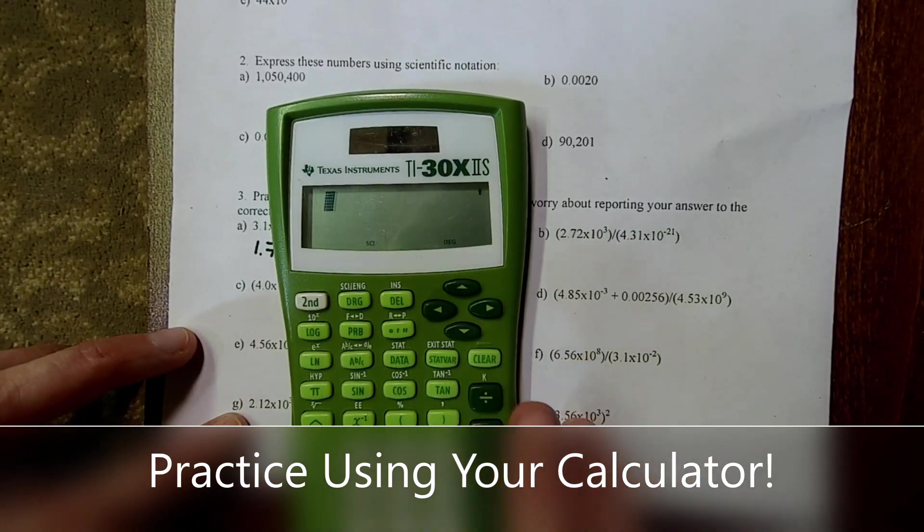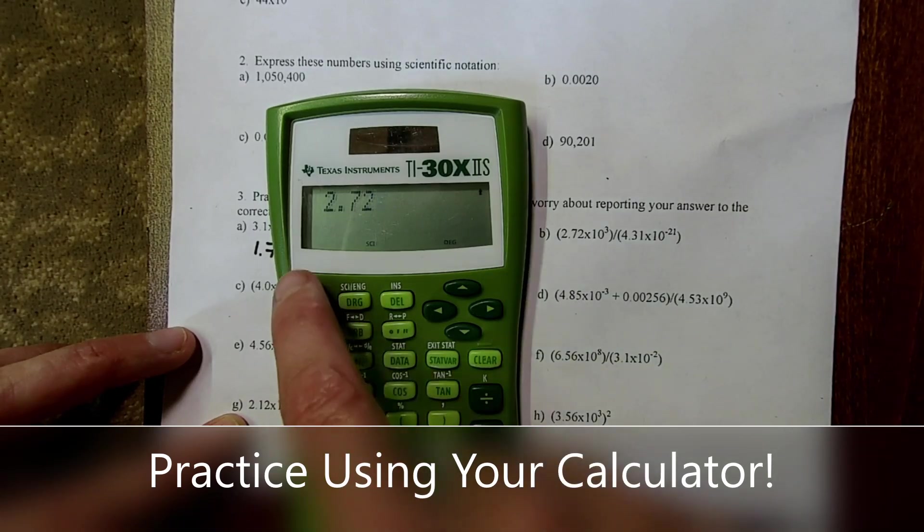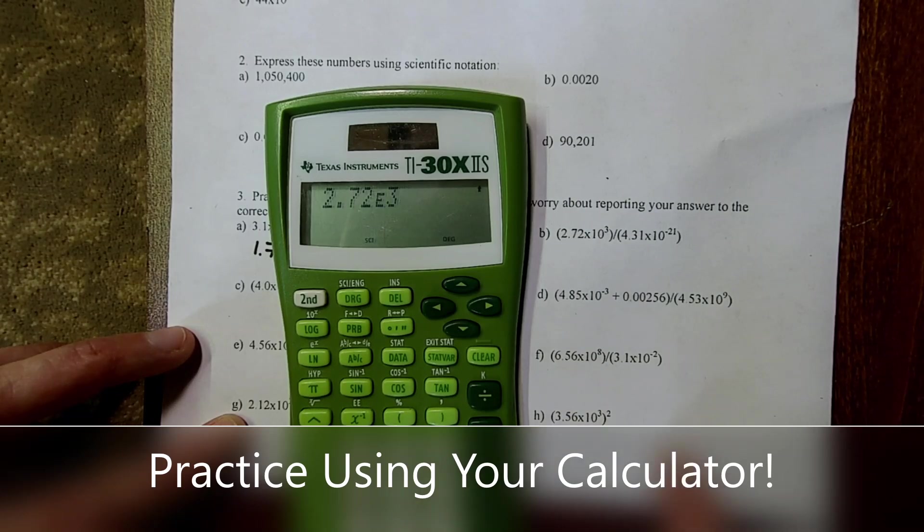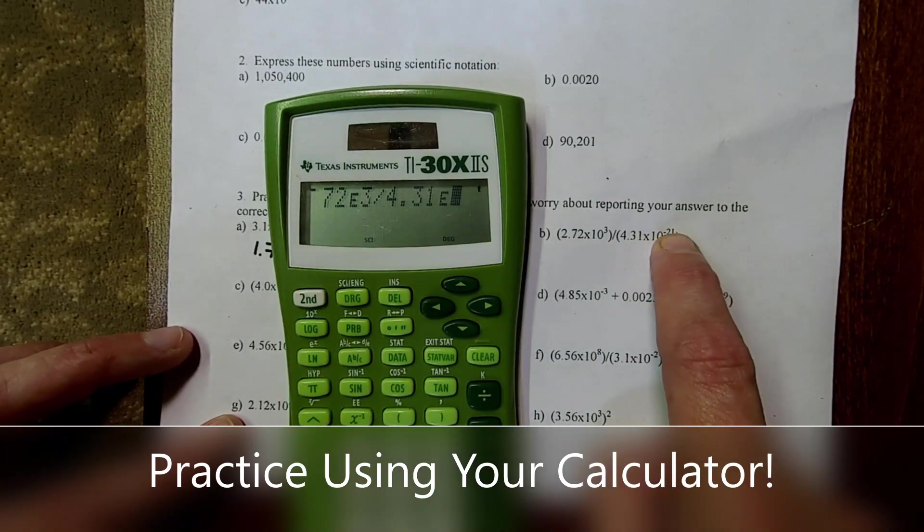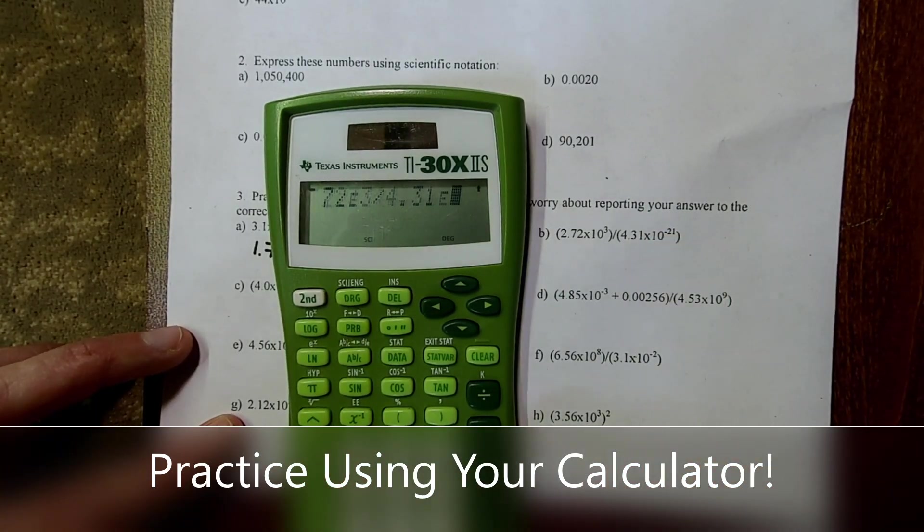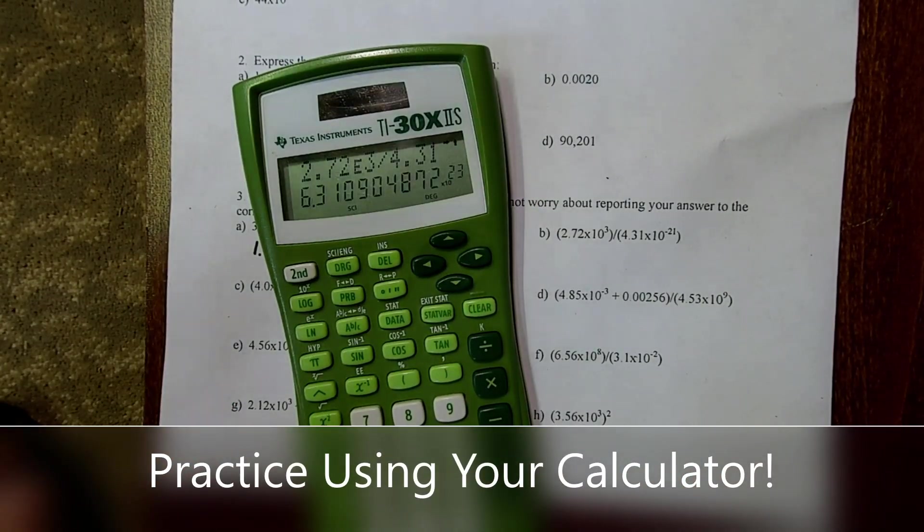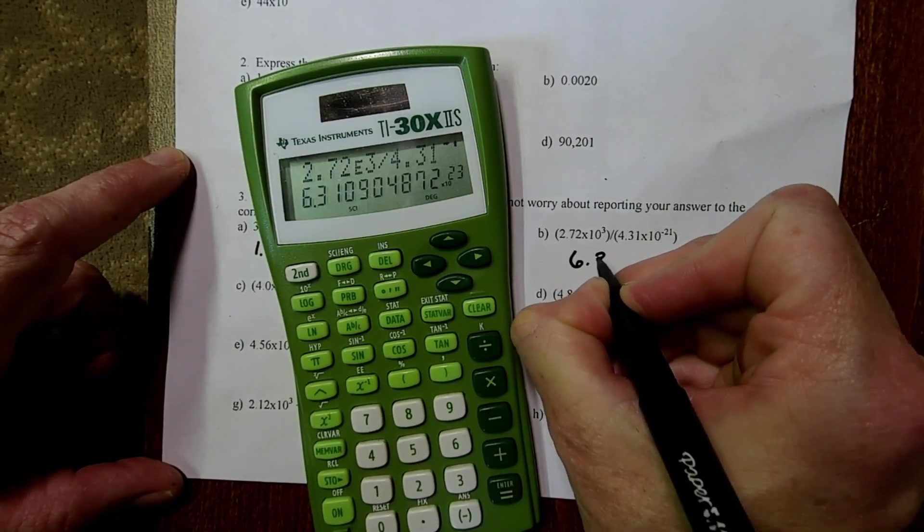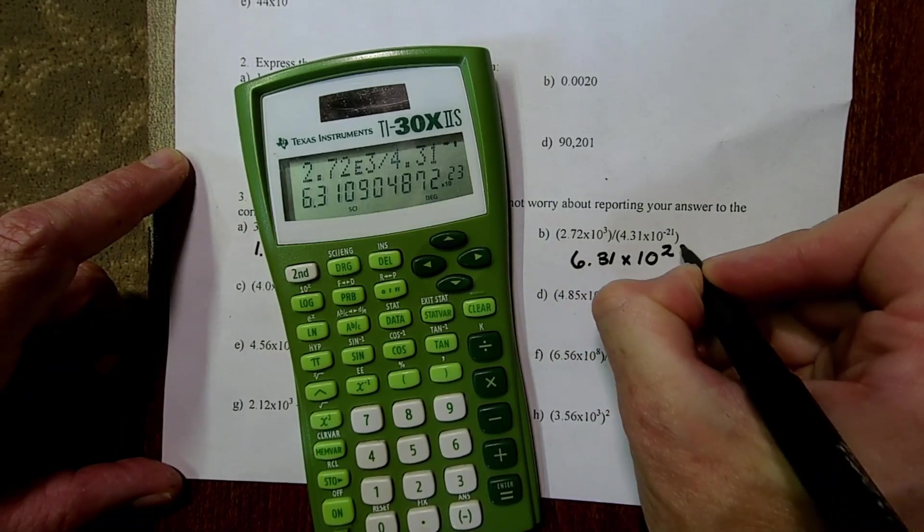On letter B, we're going to do some division. So 2.72, 2nd, E, and that's the third power, divided by 4.31, 2nd, E. Now, it's a negative exponent. So I'm going to do negative 21 on my calculator. Hit enter so we can see the answer here. And I'm not going to report it to that many sig figs. We'll do 6.31 times 10 to the 23rd.